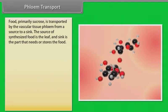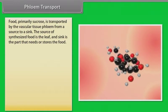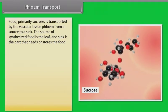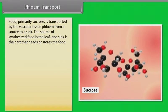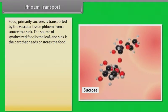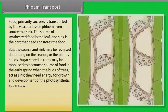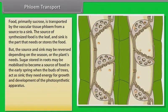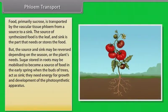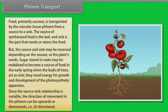Now we will learn about phloem transport. Food, primarily sucrose, is transported by the vascular tissue phloem from a source to a sink. Usually the source is that part of the plant which synthesizes the food. The source and sink may be reversed depending on the season or the plant's needs. Sugar stored in roots may be mobilized to become a source of food in the early spring when the buds of trees act as sink. They need energy for growth and development of the photosynthetic apparatus. Since the source-sink relationship is variable, the direction of movement in the phloem can be upwards or downwards.